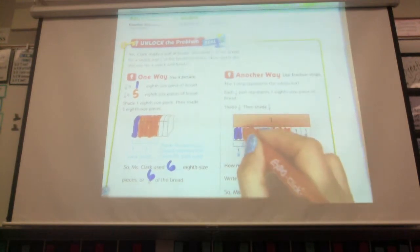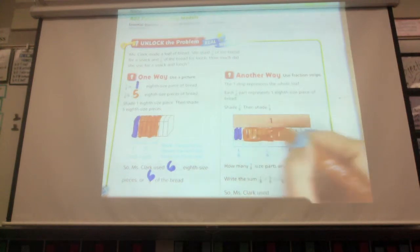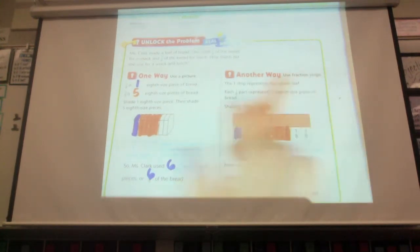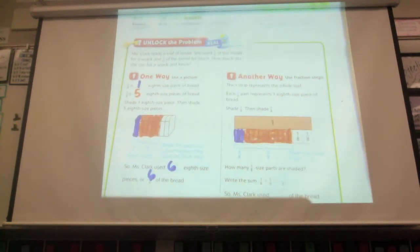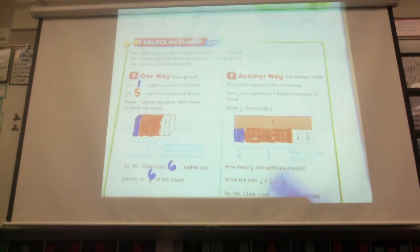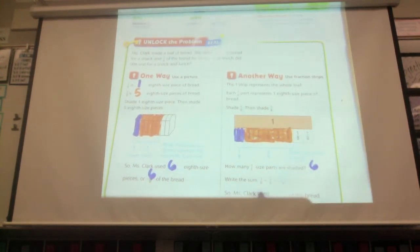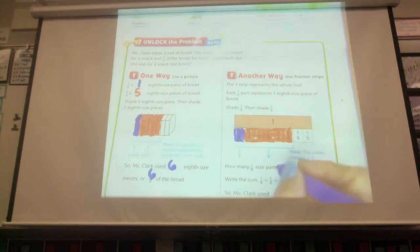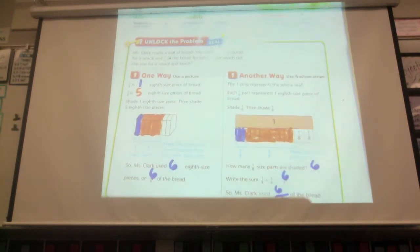Sounds like my house. Actually, not even. We use almost a whole loaf of bread. And they're not sliced into eighths. Sandwiches for everybody in our house would be 16. So we would be needing two loaves of bread of this size. All right, go ahead and shade yours in. So how many one-eighth size parts are shaded? Six total. We can write it this way. One-eighth plus five-eighths equals six-eighths. So Miss Clark used six-eighths of the bread.